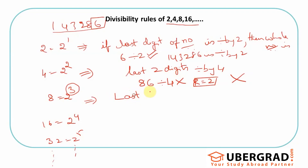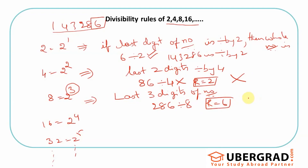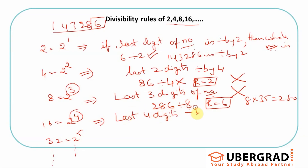8 is 2 cubed, so I focus on the last 3 digits of the number. The last three digits are 286. Is 286 divisible by 8? We get a remainder of 6 — the closest multiple is 280 — so the whole number is not divisible by 8. Similarly, for 16 (2^4), focus on the last 4 digits and check if divisible by 16.